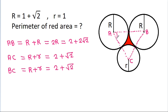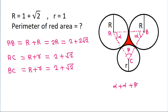So if this angle is alpha, then this angle will also be alpha. And suppose this angle is beta. Then alpha plus alpha plus beta will be equal to pi.